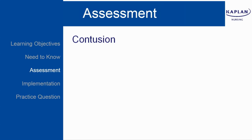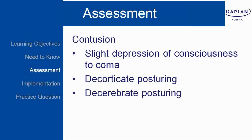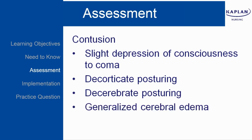Continuing with assessment for a contusion. You may see a slight depression of consciousness all the way up to coma. Decorticate posturing involves flexion and internal rotation of the arms and hands. Decerebrate posturing involves extension and external rotation of the forearms and hands — decerebrate indicates deeper dysfunction. You may also see generalized cerebral edema.